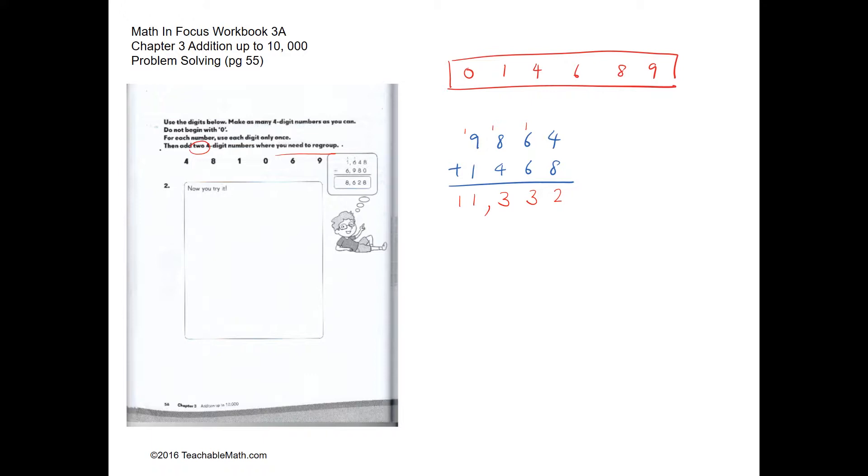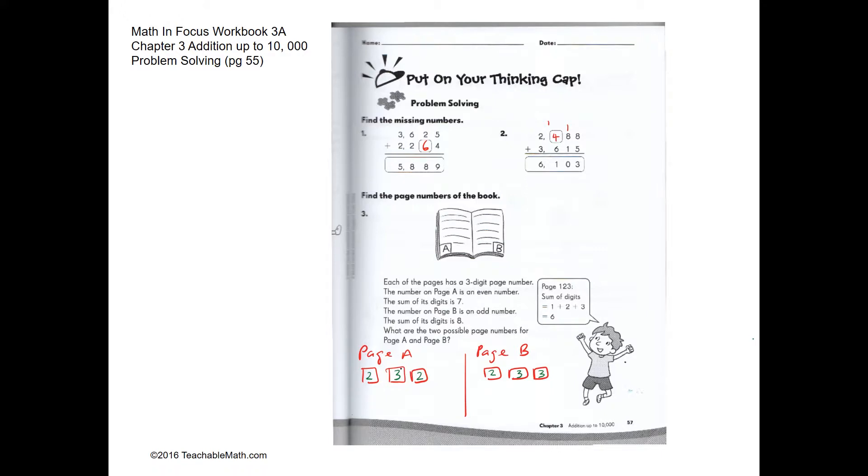Students need to understand situations that require regrouping and situations that do not. In this first example, this question does not require regrouping. So 5 and 4 will make 9, 6 tens and 2 tens will make 8 tens.